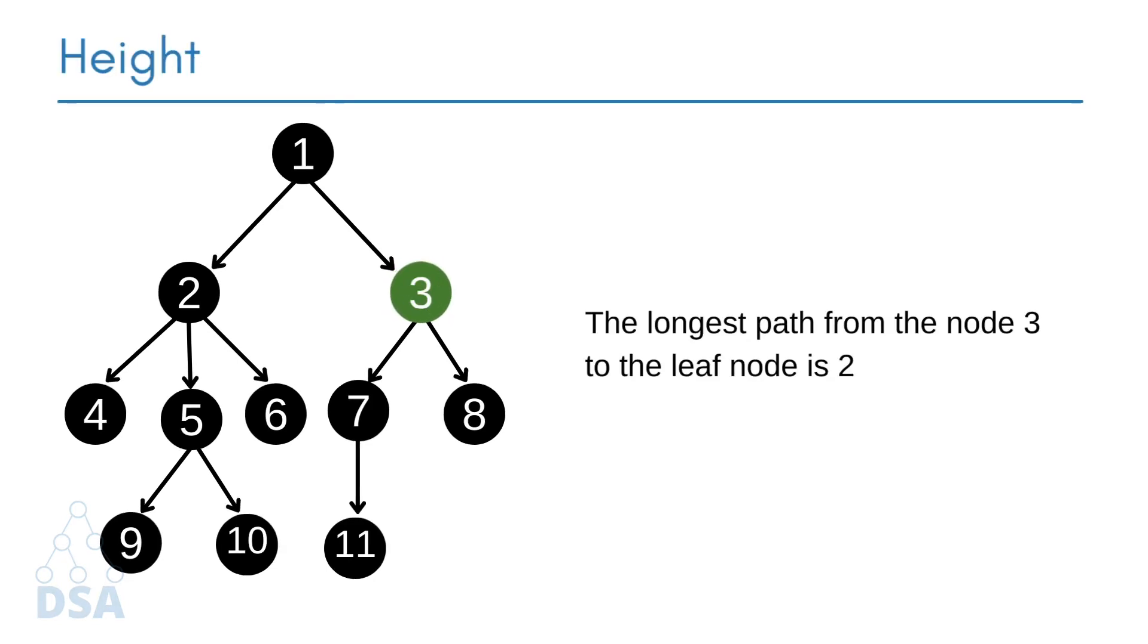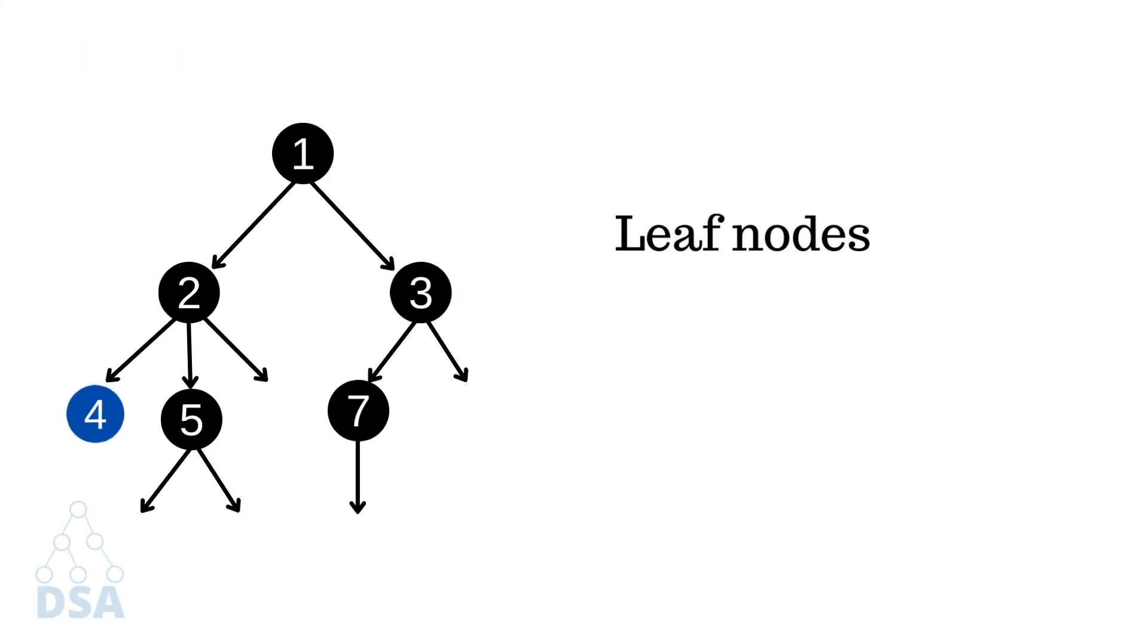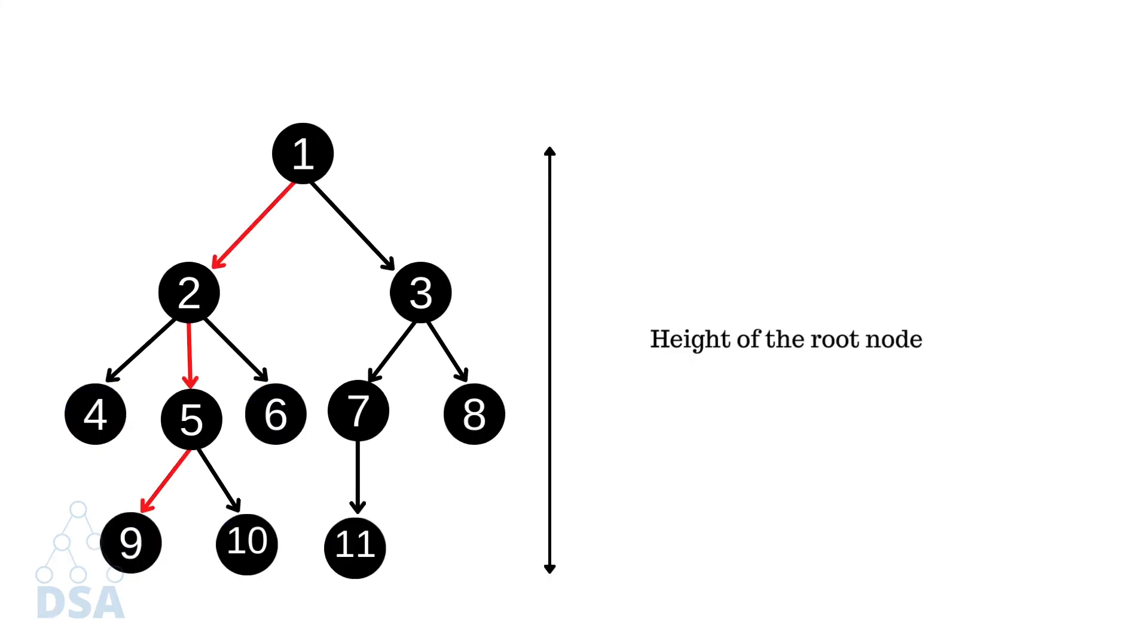In this tree, the longest path for node 3 to a leaf is 2, so the height of node 3 is 2. I am coloring all leaf nodes into blue. Now let's see what will be the height of the root node in this tree. We can reach all the nodes from the root node. The number of edges in the longest path is 3, so the height of the root node is 3.